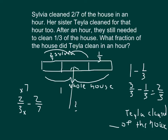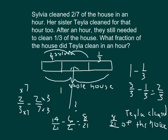Multiplying by the other denominator and using our numbers approach, we get 14/21 minus 6/21, which equals 8/21. So Tayla cleaned eight twenty-firsts of the house in that hour.